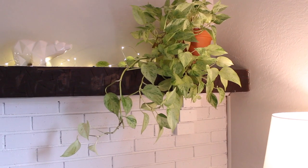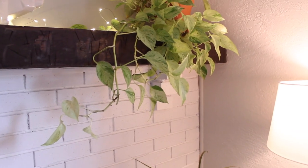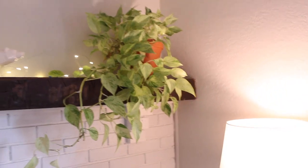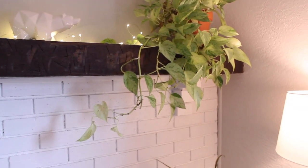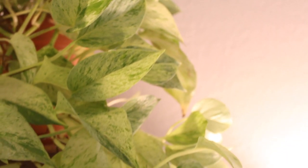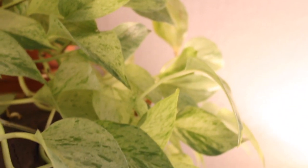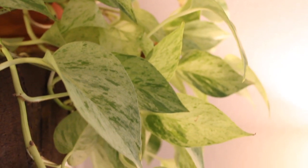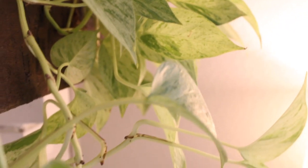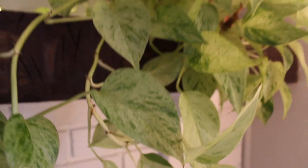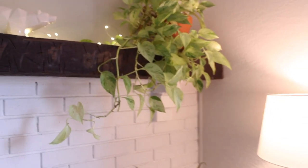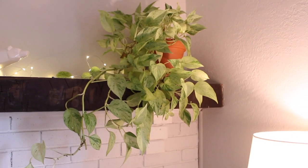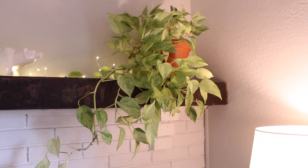Up here I have my pothos marble queen, which is doing really well. This is probably the darkest part of the living room, although you wouldn't be able to tell from this video. I try to keep the vines tucked up onto the mantle as much as possible just so it's a little less enticing for the cat to play with. It has beautiful variegated leaves and I've trimmed this one back multiple times. I've propagated some of the branches from it and it's done really well.